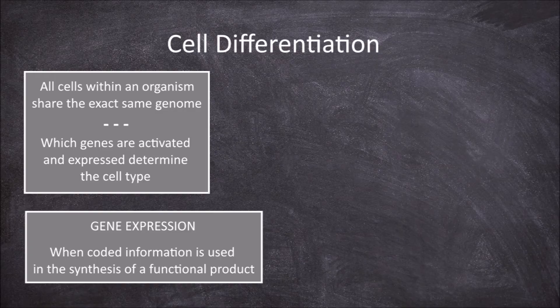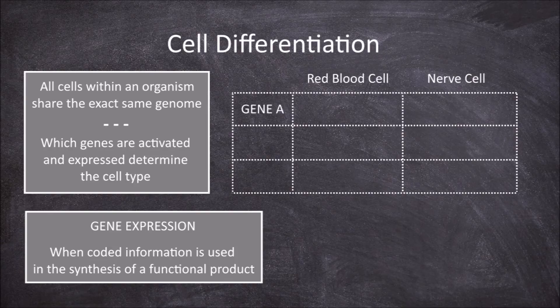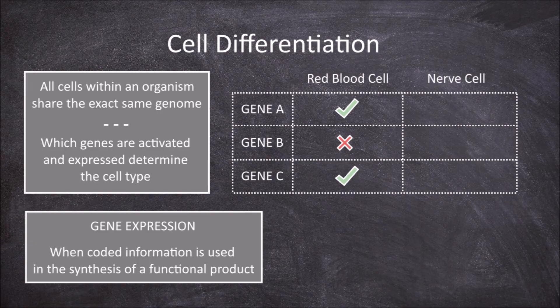Taking a simplified example with a red blood cell and a nerve cell, say they both have the same 3 genes: gene A, gene B and gene C. Despite them both having the same 3 genes, they are not all activated and expressed. The red blood cell has all 3 genes but only gene A and gene C are activated — gene B is not. The nerve cell also has all 3 genes but only gene C is activated; genes A and B are not.